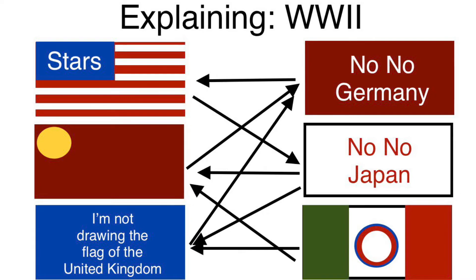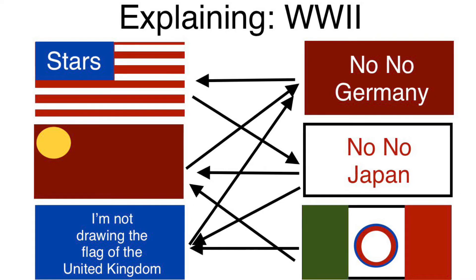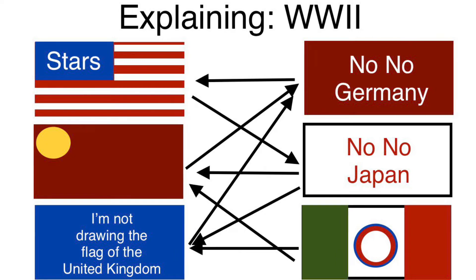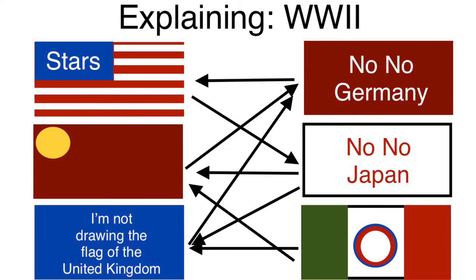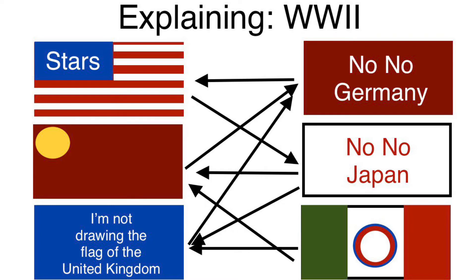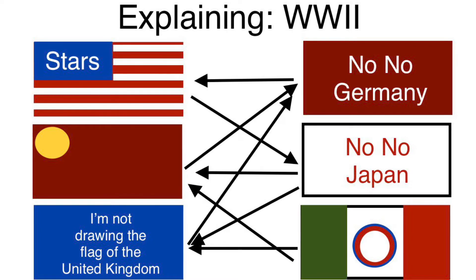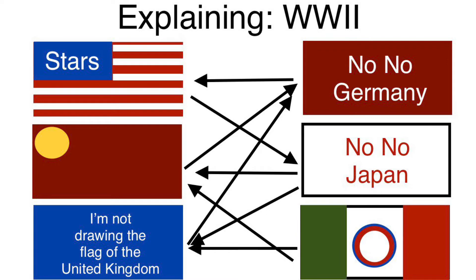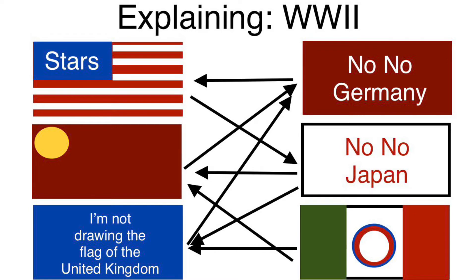On September 27th, 1940, the No-No Mustache Man, along with ambassadors from Japan and Italy, would meet inside of Berlin and would sign the Tripartite Pact. This would establish all three nations as allies, and they would become known as the Axis Powers.